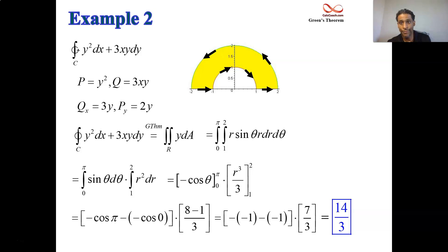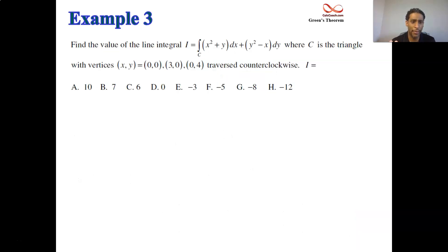We're next going to move on to another example where something really nice happens. When qx minus py is a constant, then something really nice happens as far as the calculation here. So I have this line integral listed as I, capital I here, and there's this vector field that has p and q, x squared plus y is p, and y squared minus x is q, and we have a closed curve. We have a curve that is a triangle.